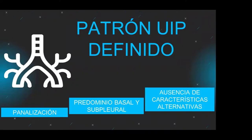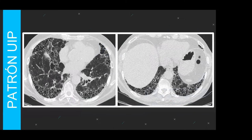¿Cuándo tengo un patrón definido de UIP? La distribución predomina en base con gradiente ápico-basal, es un patrón heterogéneo — no solo desde el punto de vista temporoespacial sino visualmente — y lo que no puede faltar es la panelización, con o sin bronquiectasias y bronquiolectasias por tracción.